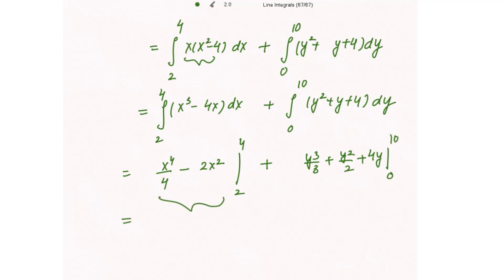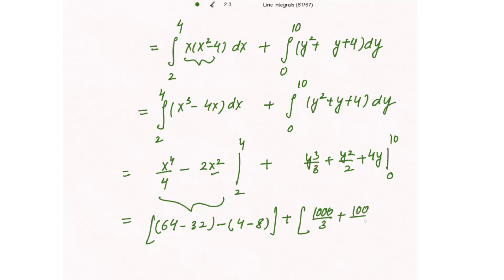Putting in the limits: for the first part we get (64 - 32) - (4 - 8), and for the second part we get 1000/3 + 100/2 + 40. Solving completely, the required answer is 1378/3.